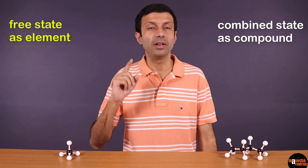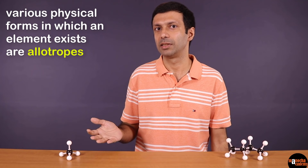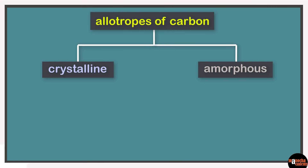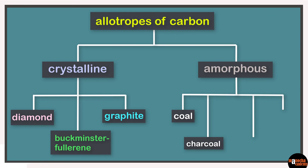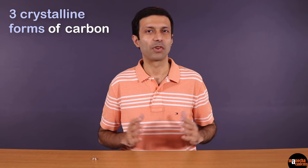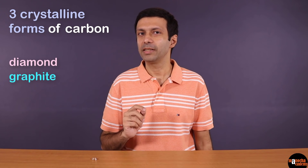In this video, we will focus on carbon in the free state as an element. The various physical forms in which an element can exist are known as allotropes of the element. Allotropes of carbon are of two types: crystalline and amorphous. Crystalline allotropes are diamond, graphite and fullerenes such as Buckminster Fullerene. The amorphous allotropes are coal, charcoal, lamp black and soot. Crystalline means the substances have a regular geometric shape, and amorphous means there is no regular geometric shape — it has a powdery form.